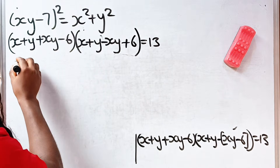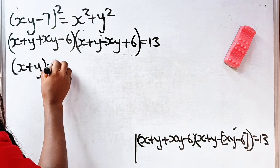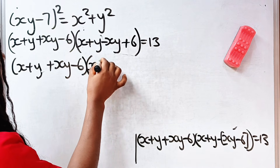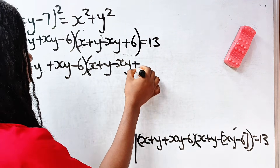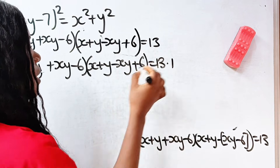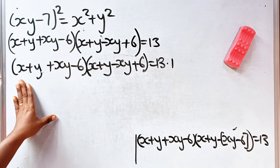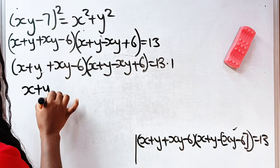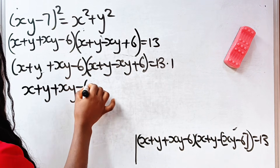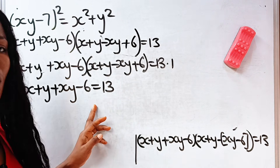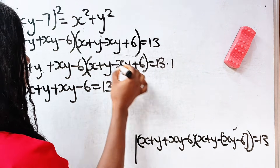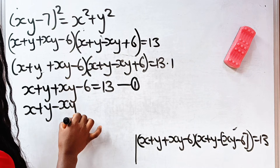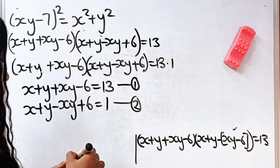So we go ahead. We have: (x + y + xy - 6) = 13 — let's call this Equation 1. And (x + y - xy + 6) = 1 — let's call this Equation 2.